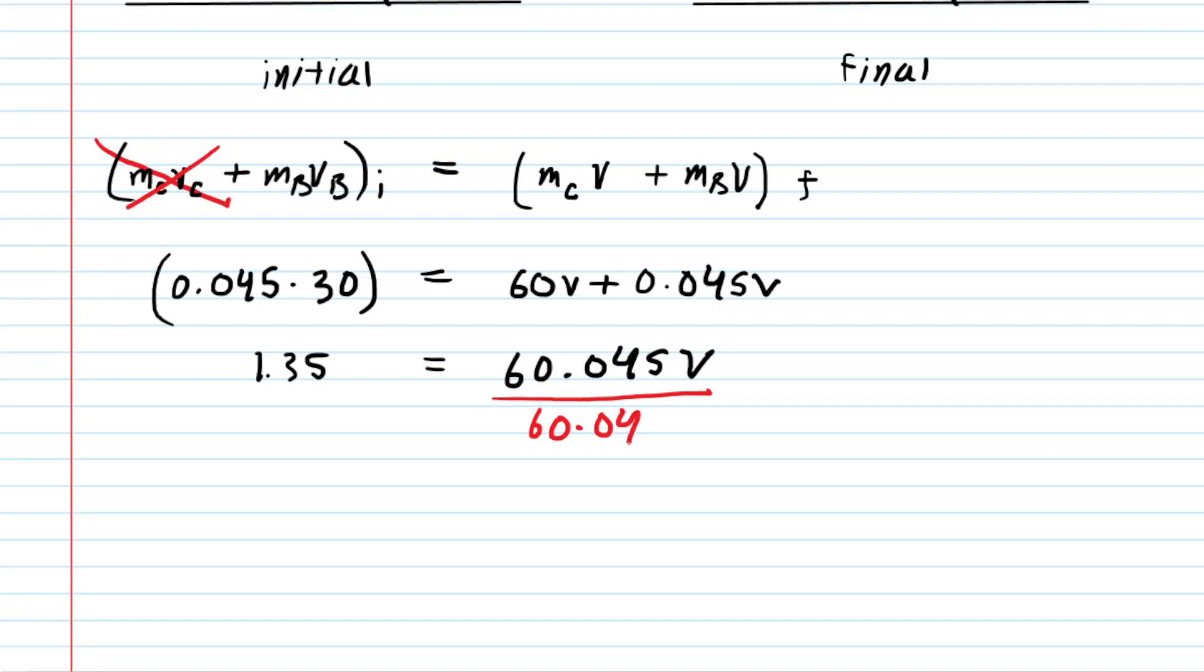Finally to solve for the velocity of the catcher as well as the ball we will divide both sides by 60.045. When we do this we get a velocity of 0.0225 meters per second. That is the velocity of the ball and the catcher and the final answer to this problem.